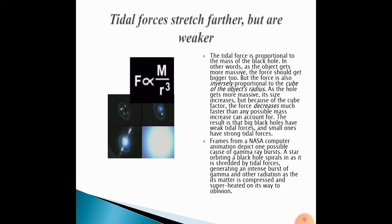Frames from a NASA computer animation depict one possible cause of gamma ray bursts. A star orbiting a black hole spirals in as it's shredded by tidal forces, generating an intense burst of gamma and other radiation as its matter is compressed and superheated on its way to oblivion.